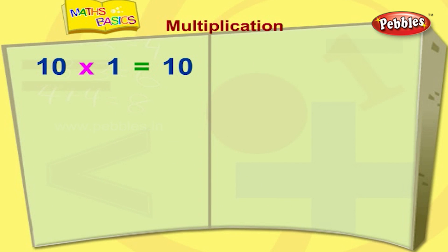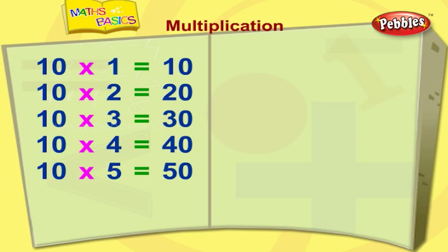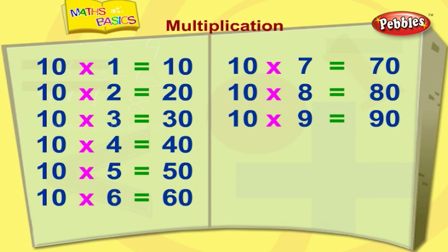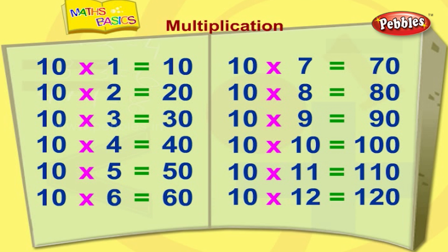Ten ones are ten. Ten twos are twenty. Ten threes are thirty. Ten fours are forty. Ten fives are fifty. Ten sixes are sixty. Ten sevens are seventy. Ten eights are eighty. Ten nines are ninety. Ten tens are one hundred. Ten elevens are one hundred and ten. Ten twelves are one hundred and twenty.